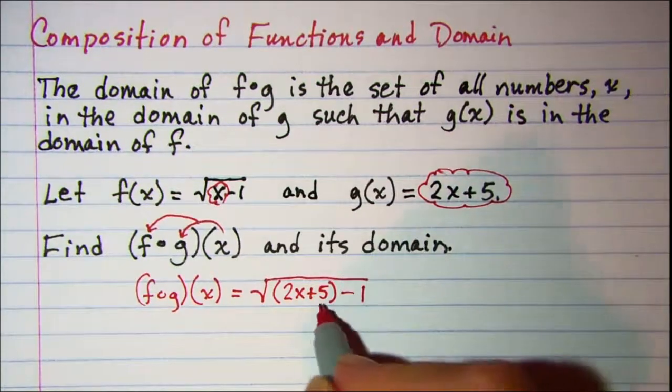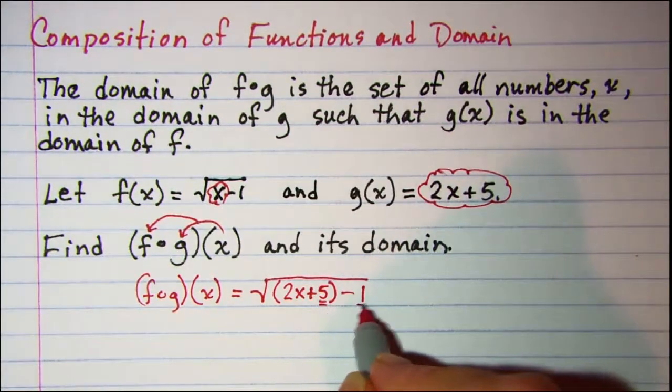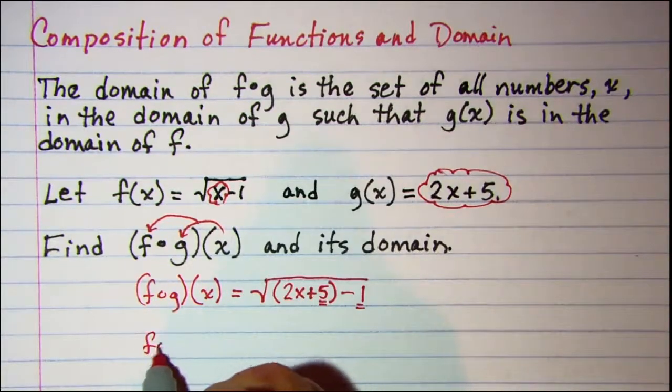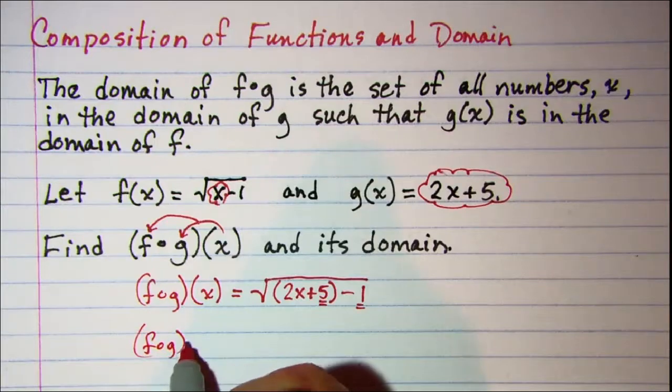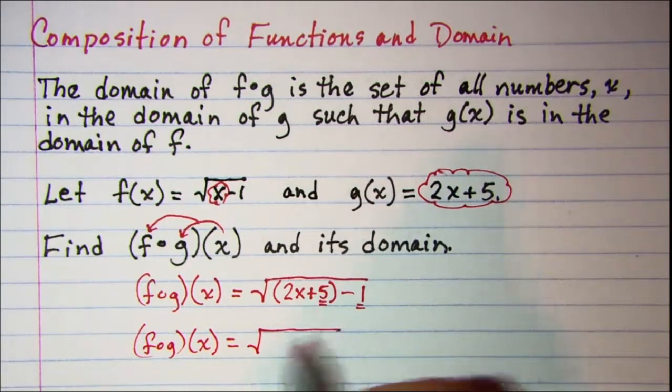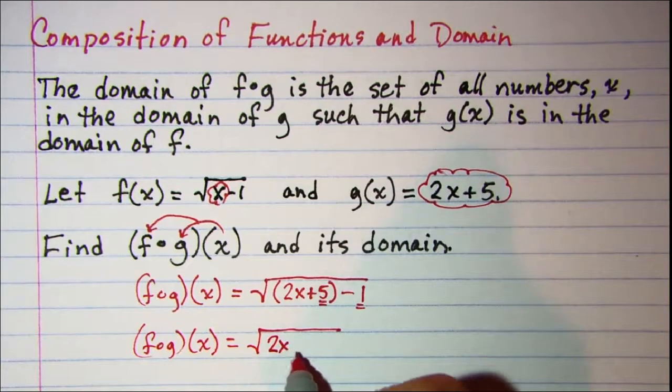Simplifying here we can combine this positive 5 and this negative 1. So we have f composition g of x is equal to the square root of 2x plus 4.